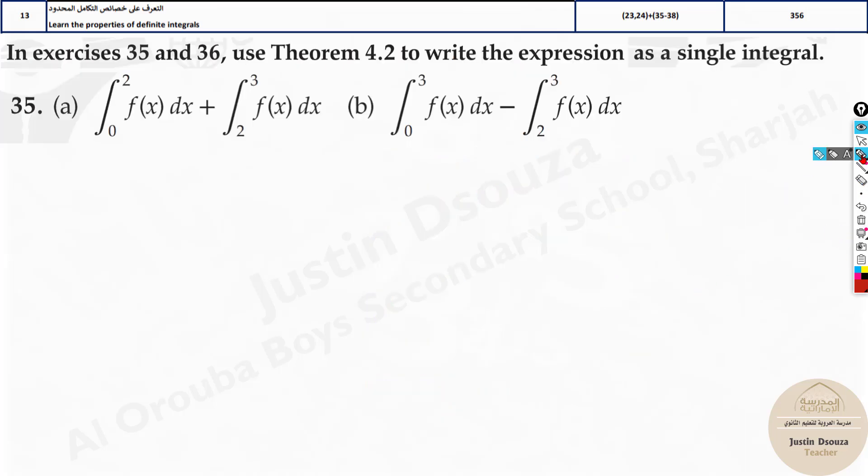Now let's try these problems. Here they are asking you to write these definite integrals in a single term, single interval. There's a rule: whenever you have 0 to 2 and this starts from 2 to 3, this is common, and the functions are also the same, we can write it as 0 to 3 directly f of x dx.